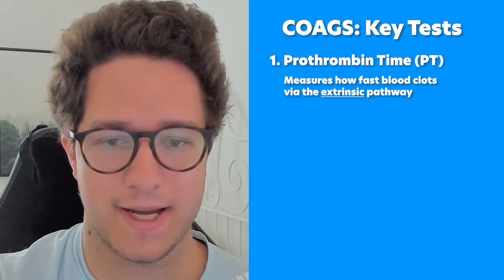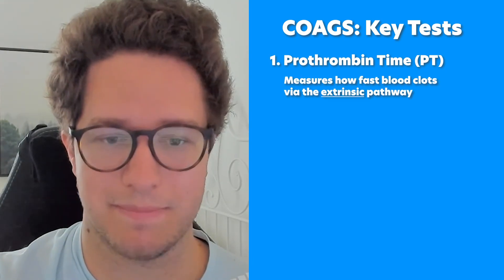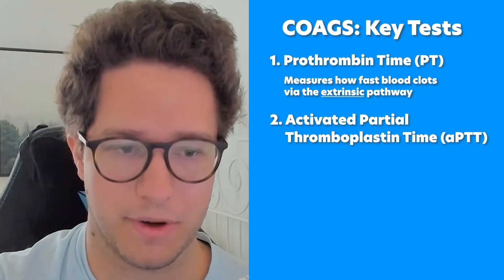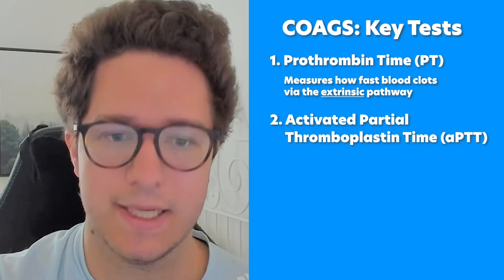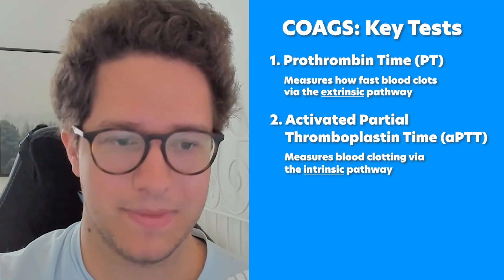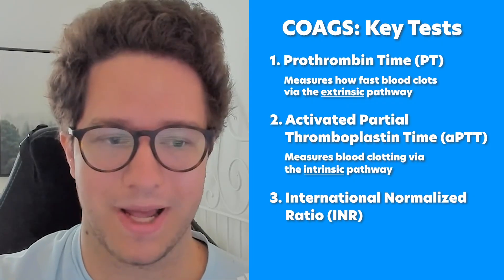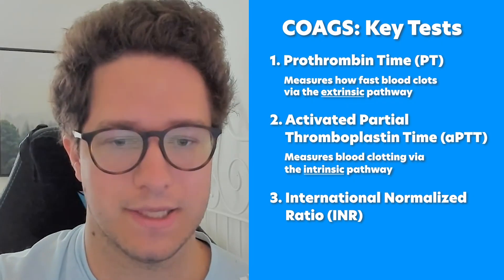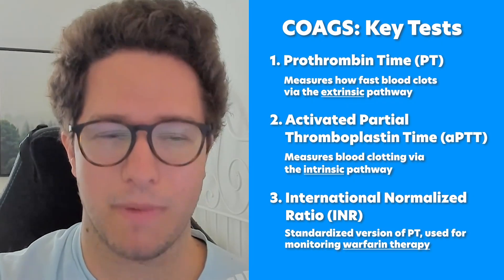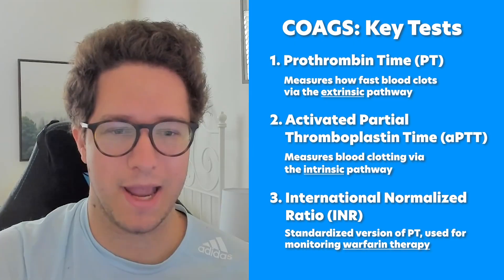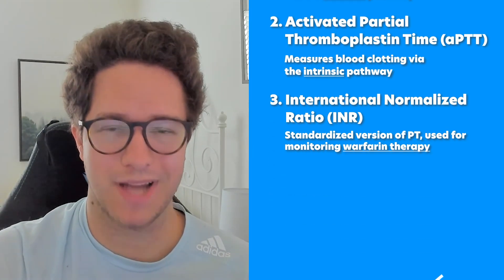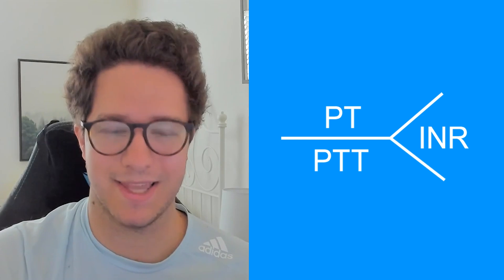PT measures how fast blood clots via the extrinsic pathway. The activated partial thromboplastin time, or APTT, measures clotting via the intrinsic pathway. The international normalized ratio, or INR, is a standardized version of PT, mainly used for monitoring warfarin therapy. And when you take shorthand notes on your patients, you can diagram out the coags like this.